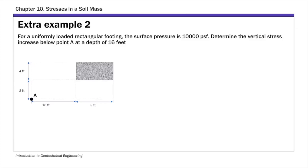This is Chapter 10, Extra Example 2: Stress Distribution Due to a Rectangular Loading. This example is similar to the previous one, Extra Example 1, in the sense that the point of interest, point A, is not directly below the corner of the loading area. Therefore we need to construct several rectangles and use the principle of superposition to find the stress increase due to the original rectangular footing. Unlike Extra Example 1, in this one I'm going to show the use of the bilinear interpolation equation to calculate the influence factor I3. So let's get started.